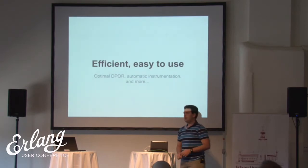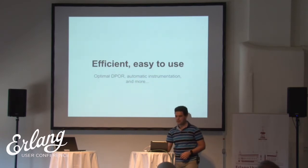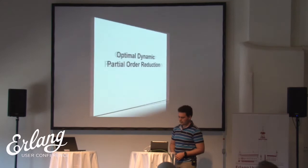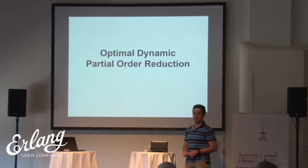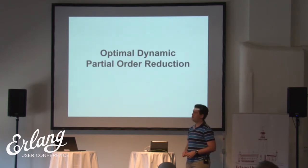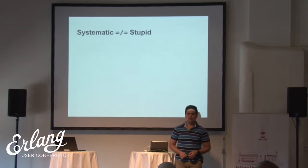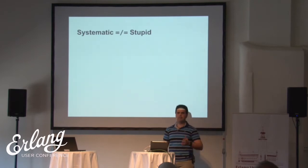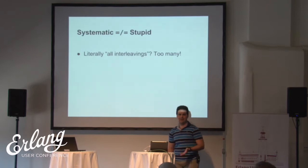The goal today is to show you a lot of things that Conqueror has to make it efficient and really easy to use. To start with, let's discuss a weird little thing that we recently achieved, which is called optimal dynamic partial order reduction. Systematic testing, the way I described it, might sound to you something like stupid — take every possible interleaving, that sounds too many. And this is exactly the case.